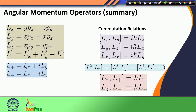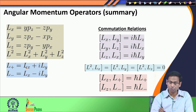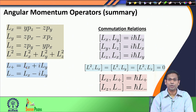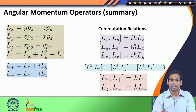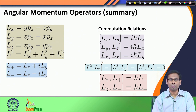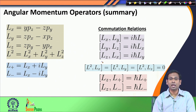What is very interesting and important in angular momentum is the commutation relation that these operators follow. For example, L_x and L_y, or L_y and L_z, or L_z and L_x — the three components of the angular momentum operator — do not commute with each other. Since they do not commute with each other, we cannot define a common complete set of eigenfunctions for them.